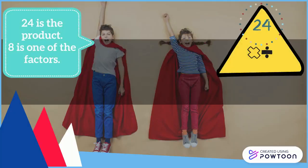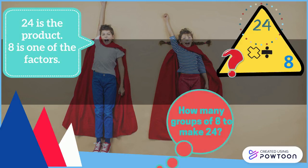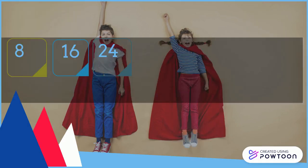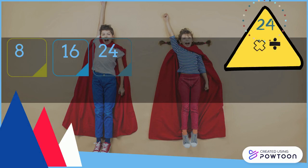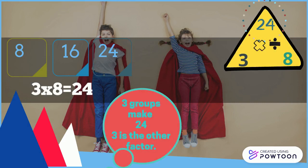24 is the product. 8 is one of the factors. How many groups of 8 make 24? 8, 16, 24 — 3 groups make 24. 3 is the other factor.